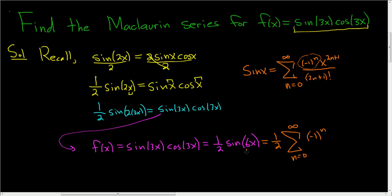But this is our x. This is what's going to get replaced here. So instead of x to the 2n plus 1, we actually have 6x to the 2n plus 1. And in the denominator, we still have 2n plus 1 factorial.